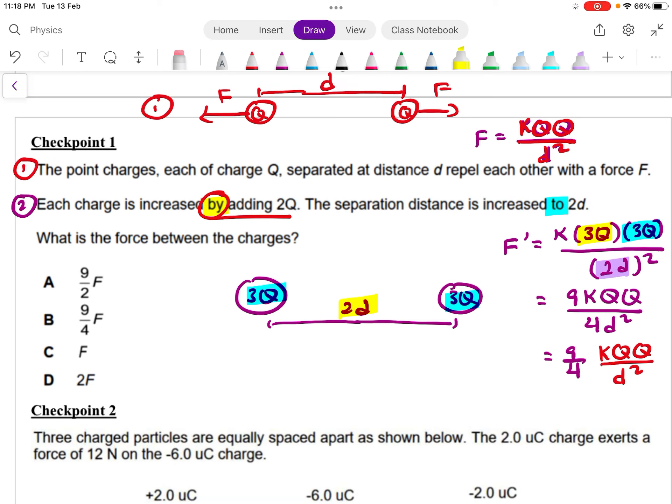So this whole thing here, if you recognize, right, is actually the original F. So this one is F. So meaning that now, the new force is 9 over 4F. So the answer for this is B.